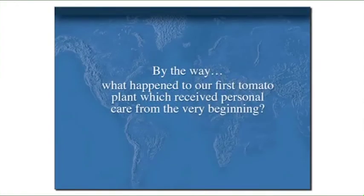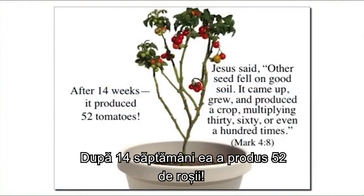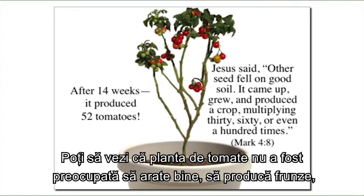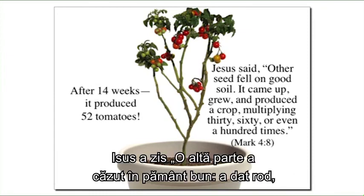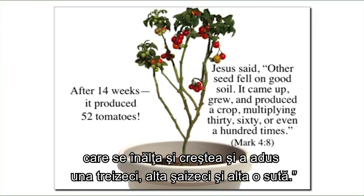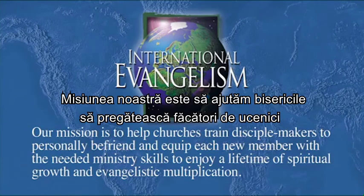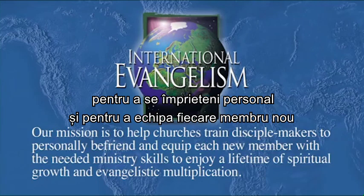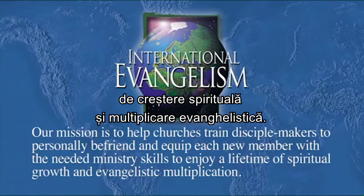Page 45: What happened to the first tomato plant that received personal care from the very beginning? After 14 weeks, it produced 52 tomatoes. You can tell the tomato plant wasn't focused on looking pretty or producing leaves — it was focused on producing fruit. Jesus said, 'Other seed fell on good soil, it came up, grew, produced a crop, multiplying 30, 60, or even 100 times.' Page 47: Our mission is to help churches train disciple-makers to personally befriend and equip each new member with the needed ministry skills to enjoy a lifetime of spiritual growth and evangelistic multiplication.